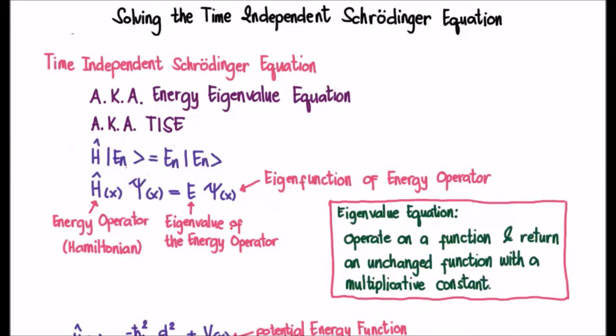So what does the time independent Schrödinger equation look like? Well, the first thing to note is that we have an H symbol here which stands for the Hamiltonian. And the fact that it's got a hat on it tells you it's an operator. Just like addition, subtraction, multiplication, division are operators or instructions, the Hamiltonian operator is an instruction to calculate the energy of the system.